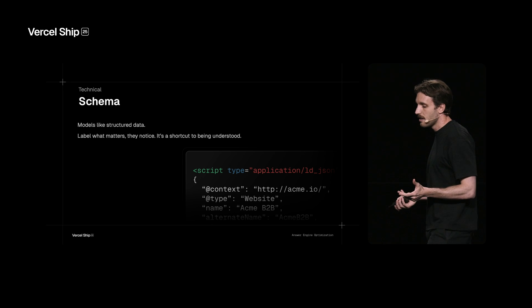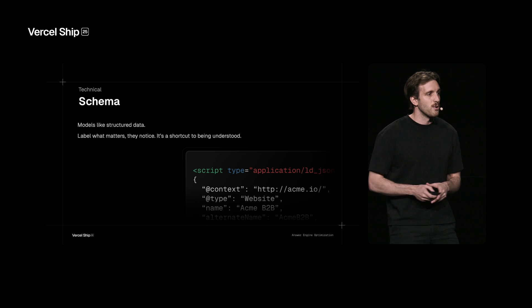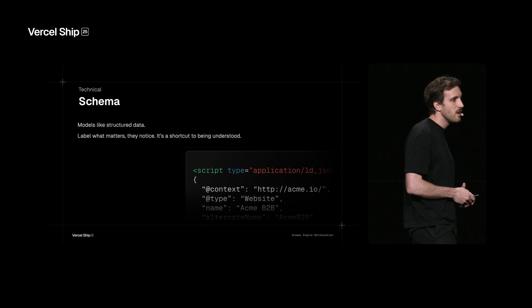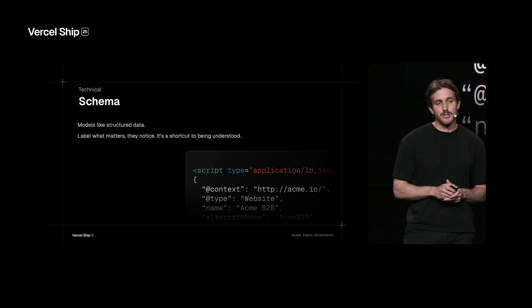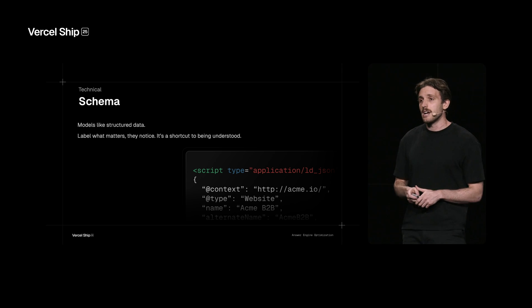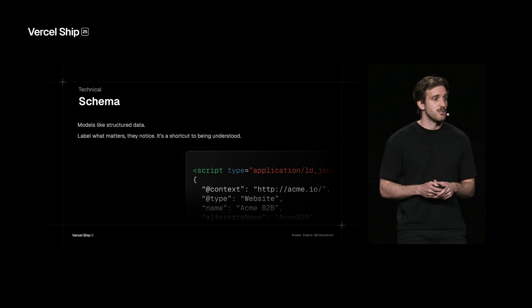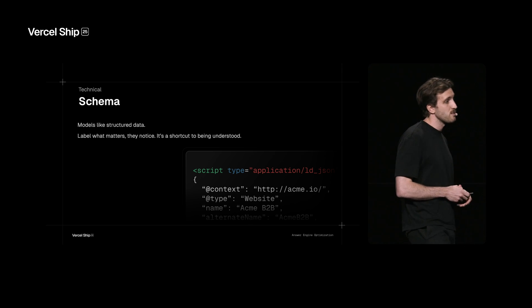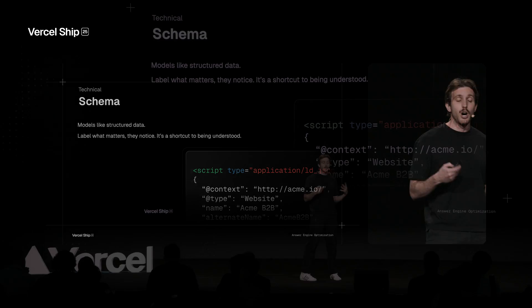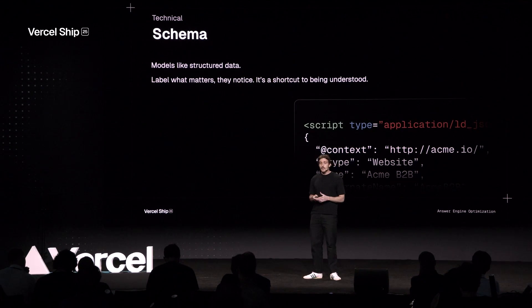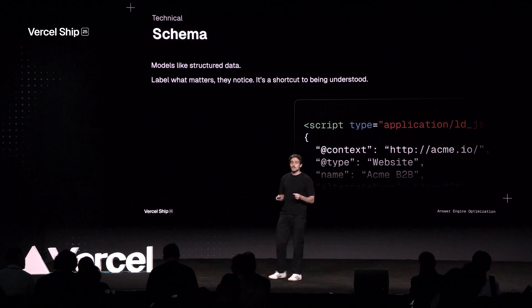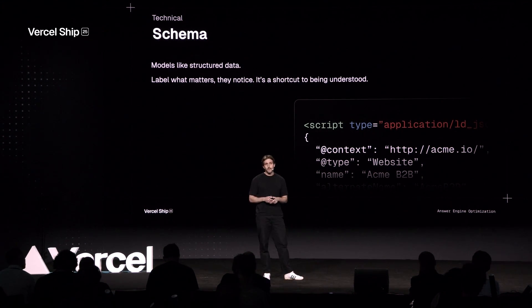Next up is Schema. Schema is a framework in the search community to show structured data on your sites. From working with our clients at Profound and running a ton of experimentation, we've found that pages with structured data actually perform 200% better in terms of getting models to select you in answer engines. The reason is you basically want to show the most important data in a very easy way for the models to parse it. We've also found it particularly effective for FAQ-style schema on pages.